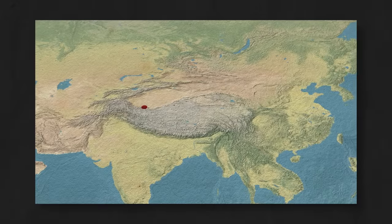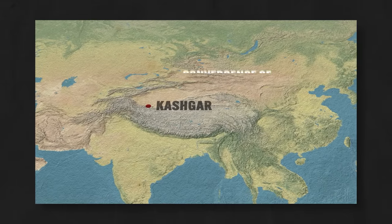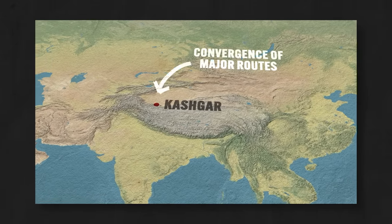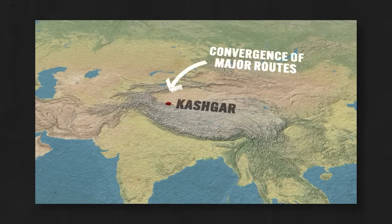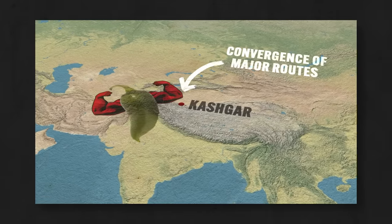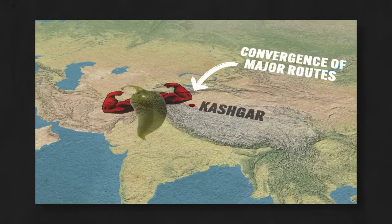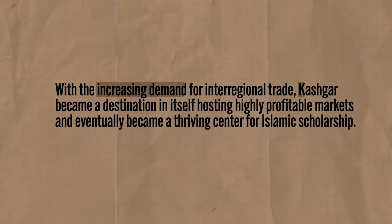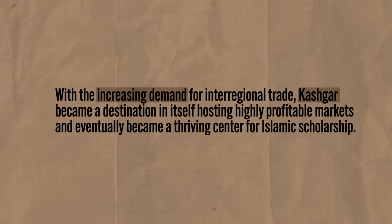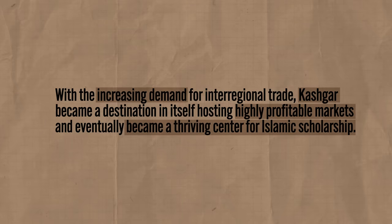First is Kashgar, on the eastern edge of China. It was located at the convergence of two major routes of the Silk Roads, which before and after passed through exceedingly hot and dry terrain. Kashgar was built around a river, making the lush valley suitable for agriculture, so traveling merchants could stop there for water and food. With increasing demand for inter-regional trade, Kashgar became a destination in itself, hosting highly profitable markets and eventually becoming a thriving center for Islamic scholarship.